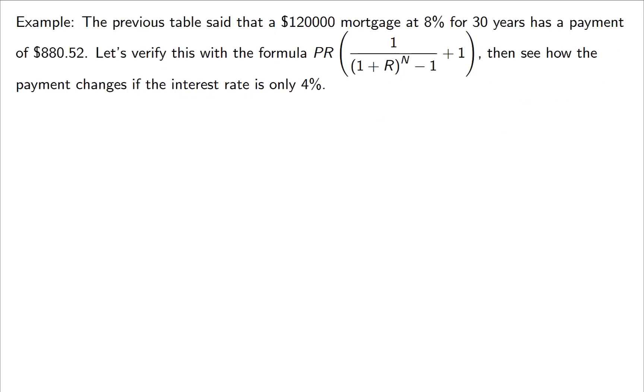Let's see if we can verify one of these values. A $120,000 mortgage at 8% for 30 years had a payment of $880.52. Let's see if we can verify that using this formula. And I'm going to do this in two halves because we're also asked to do it with a much smaller interest rate of 4%, just to see how big of a difference that will make. Let's highlight a few values here. This value is P. The 8% is your lowercase r and the 30 is your t.